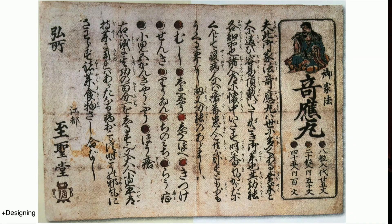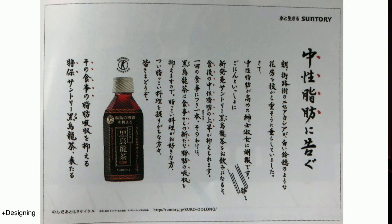Even before movable type, the interplay of text characters, lines, and the space around them can still be seen, as in this flyer advertising a medicine from the Edo period. And today one sees modern advertising trying to evoke a similar mood and style with its use of this calligraphic font and vertical type layout, as in this tea ad that proclaims its effect on aiding fat reduction in the body.